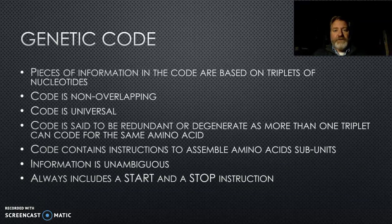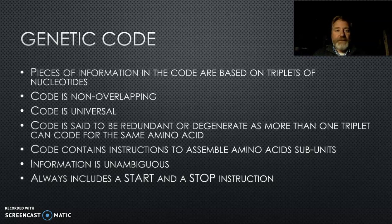Our genetic code has some important characteristics. We read the nucleotides — the structures that make up DNA — in sets of three, in triplets. Those triplets don't overlap; three nucleotides code for a particular amino acid and you can't over-read them. The code is universal — all living things have the same code — which means you can take a gene from any organism and put it into any other organism.